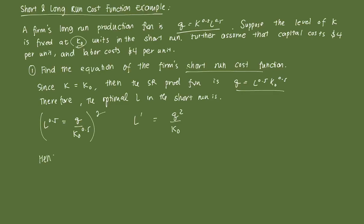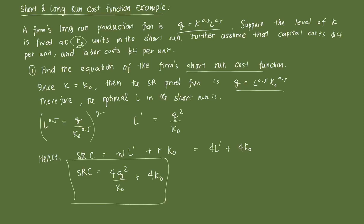Hence, your short-run cost function is just equal to W times the amount of labor you employ plus R times the fixed level of capital. Since both W and R are equal to 4, that's 4L' + 4K0. Simplifying, we get SRC = 4Q²/K0 + 4K0. This is your short-run cost function — a function of Q and the fixed input K0.